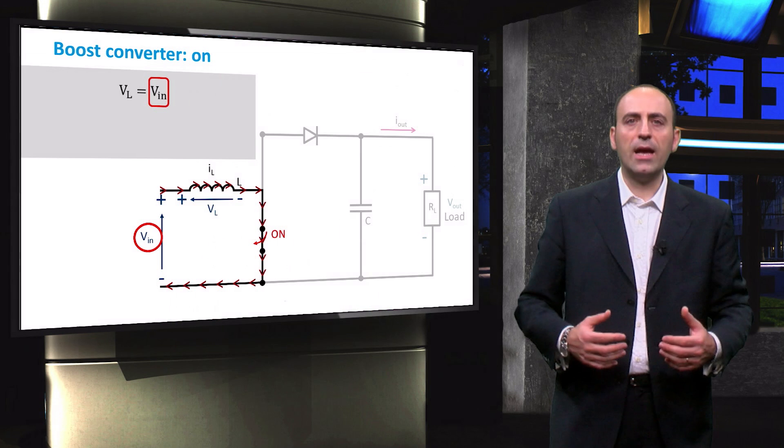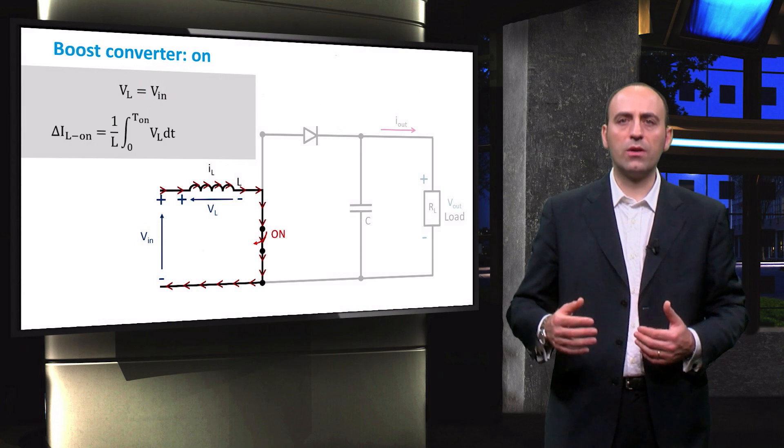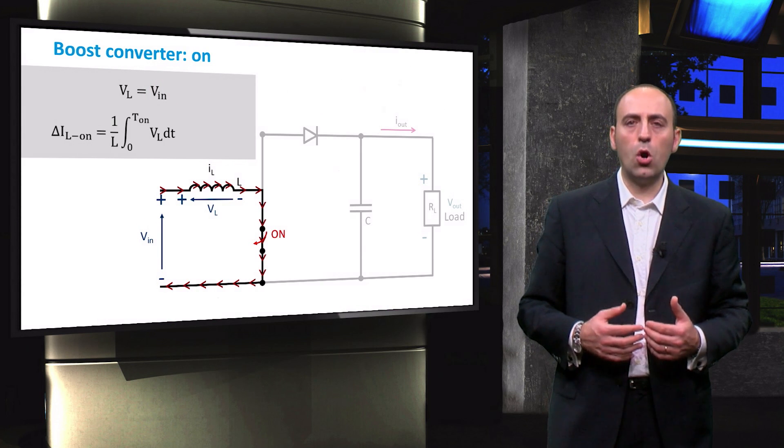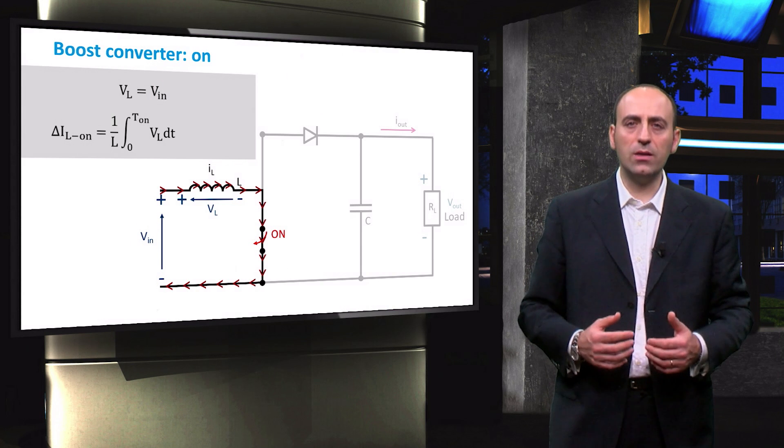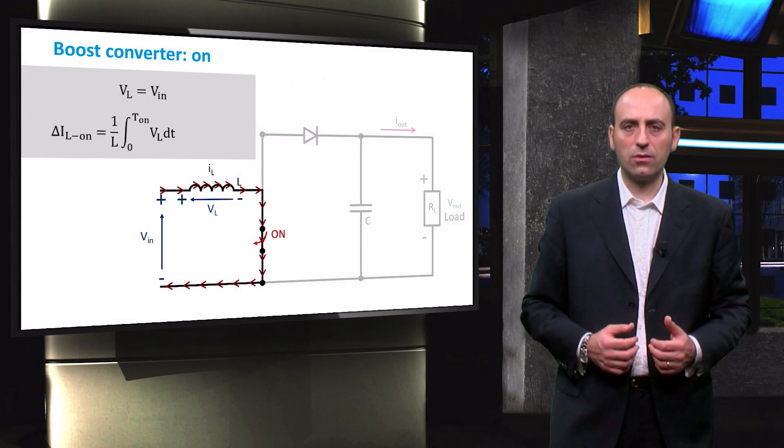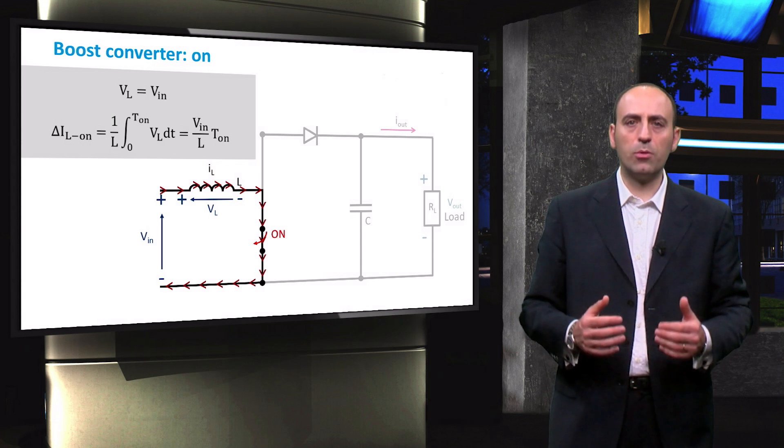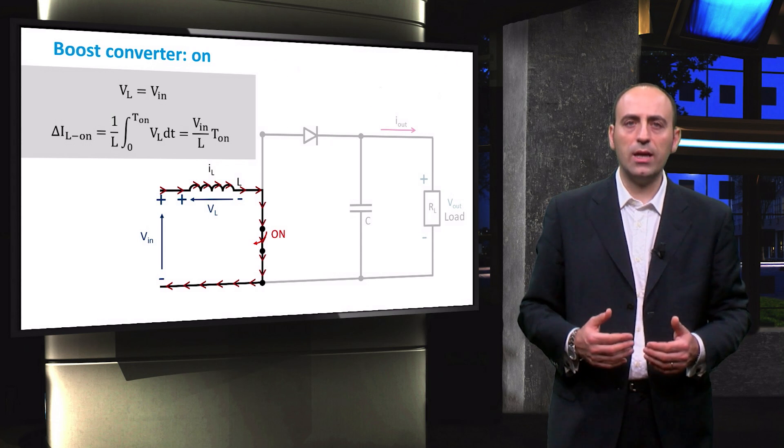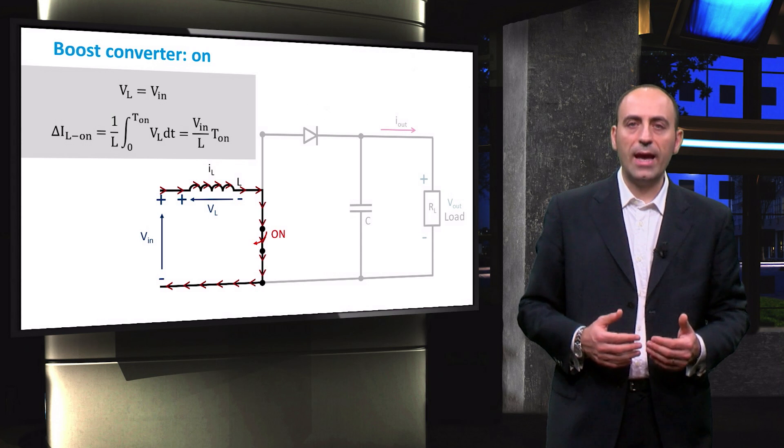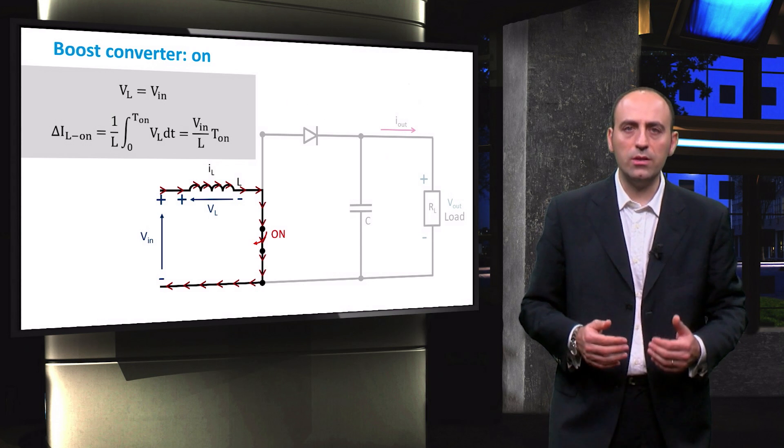Then, as for the buck converter, we can compute the increase of current in the inductor during the ON mode by integrating in time the voltage across the inductor. The result is that the increased current is directly proportional to the input voltage and the ON period, and inversely proportional to the inductance L.